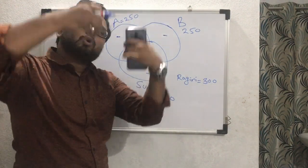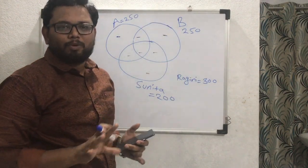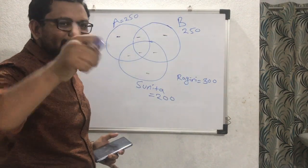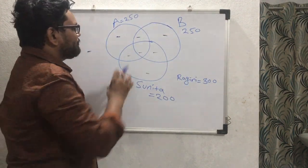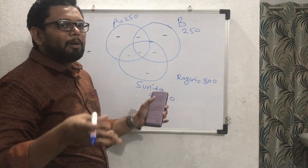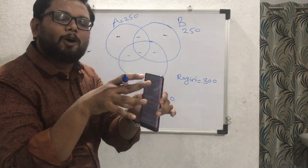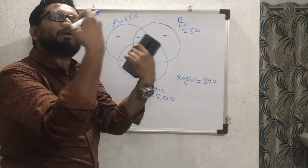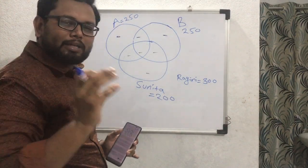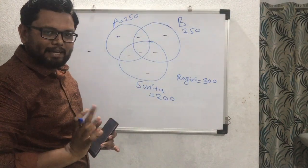If you don't support Sunita, it is obvious that you are supporting Ragini. This is why those outside Sunita's circle are the students supporting Ragini. But with A and B, you don't have to do this — in A and B, you don't have to support both proposals, and if you don't want to support any proposal, you don't have to. This is why we have an intersecting structure.